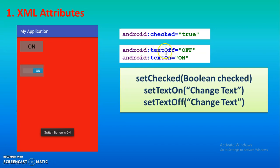The text in the off state will be 'off' and the text in the on state will be 'on', but you can write any text. Suppose you don't want 'on' and 'off' — in place of that you want other text — that you can also use.